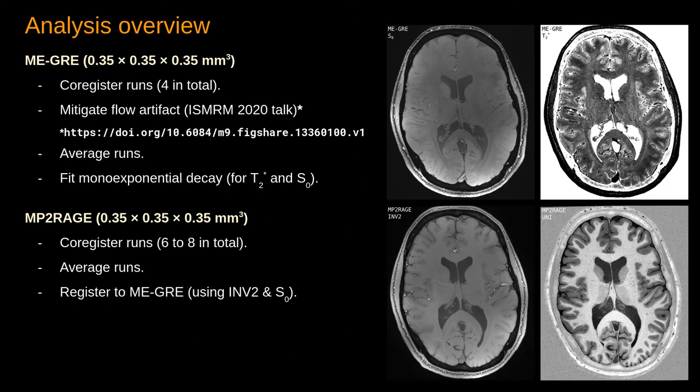Because at this very high 0.35 mm resolution we had low SNR, our aim was to register all our runs and by averaging, boosting our SNR. After averaging all these runs, we fit a mono-exponential decay to compute T2 star and S0 images.